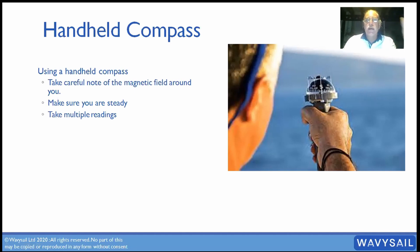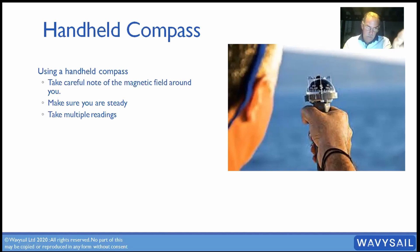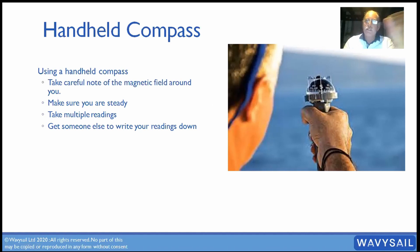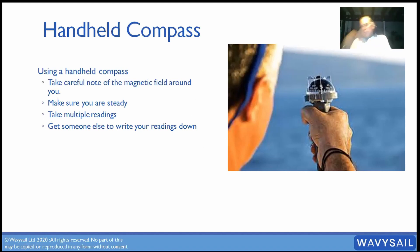If you're shooting a bearing at a lighthouse, shoot it three times. For example: 138, then 137, then 139 — call it 138. Get someone else to write your readings down, because if you're doing a three-point fix, the quicker you do it the more accurate it will be. The boat is still moving while you're doing it, so having someone else write them down lets you go from sight to sight to sight very quickly.